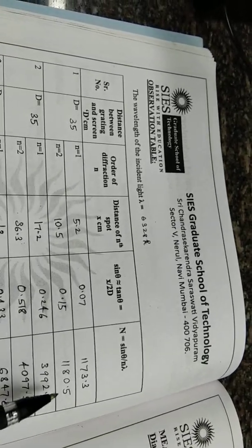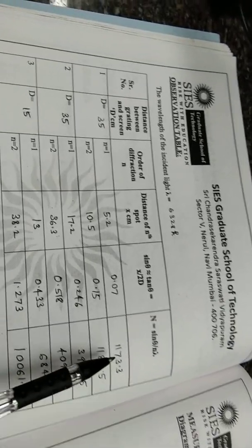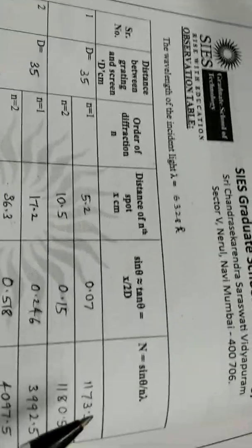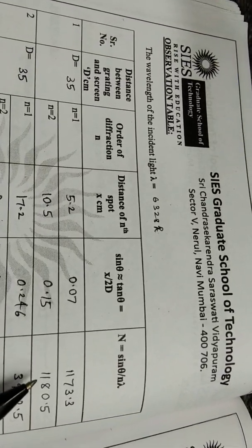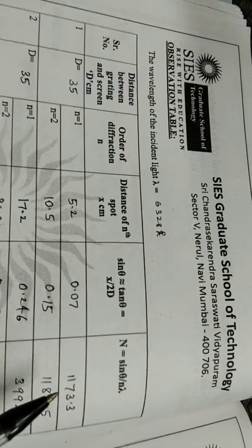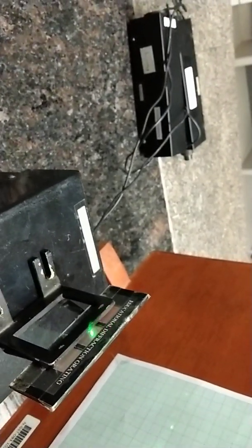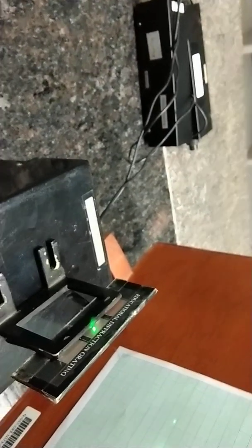We substitute the values in this formula and find the capital N value. We perform the experiment for one N value first. As we saw, it is written 100 lines per millimeter, which is nothing but 1000 lines per centimeter, and we get the corresponding N value. We can then perform the experiment again by altering the position of the diffraction grating sheet.